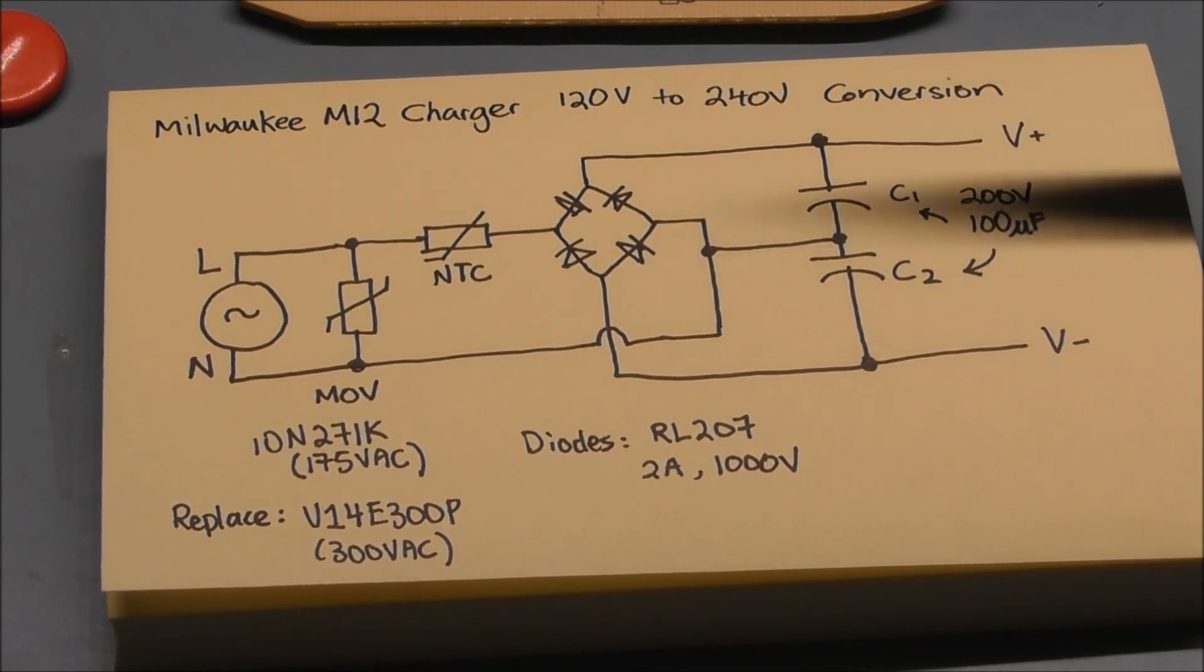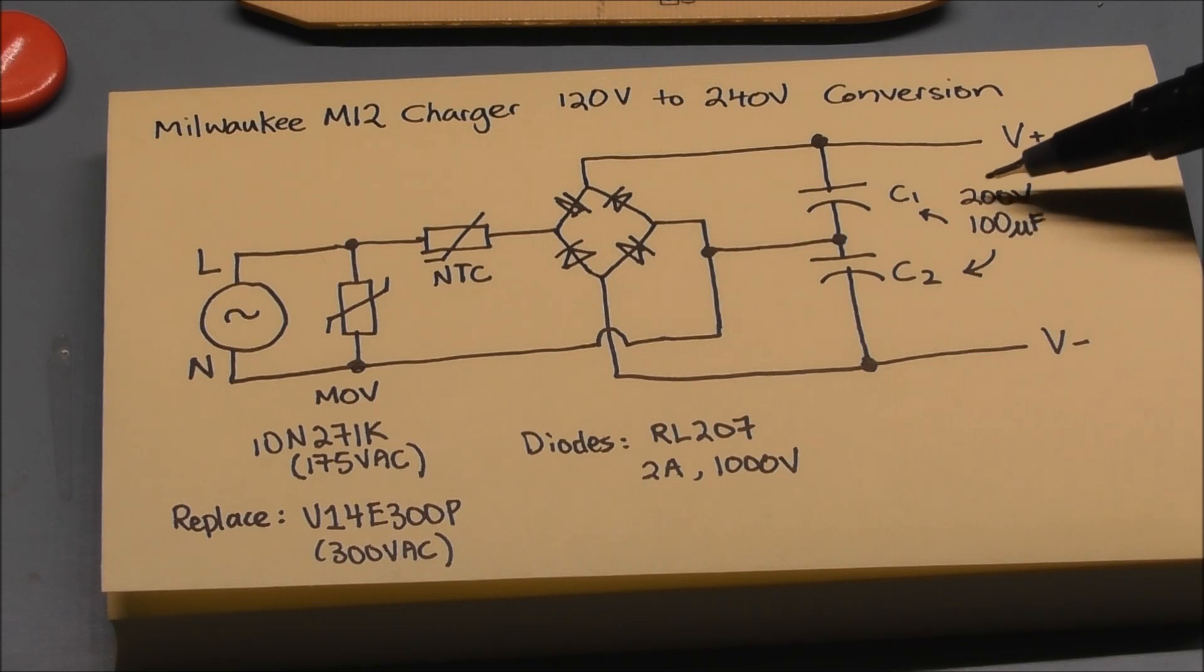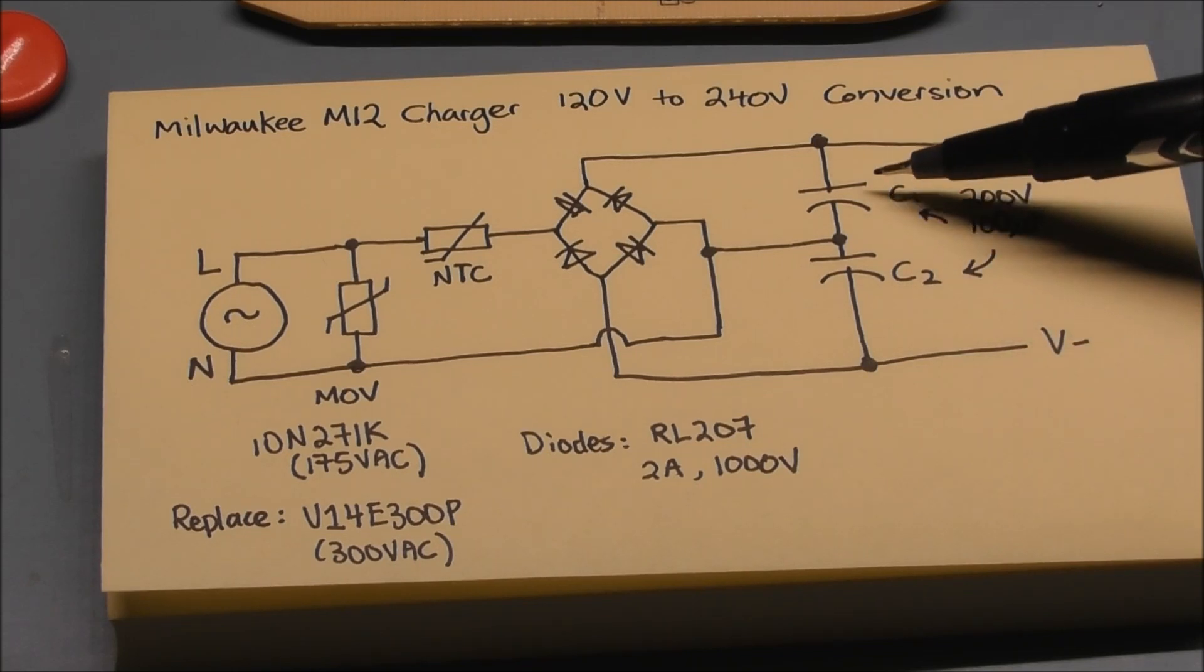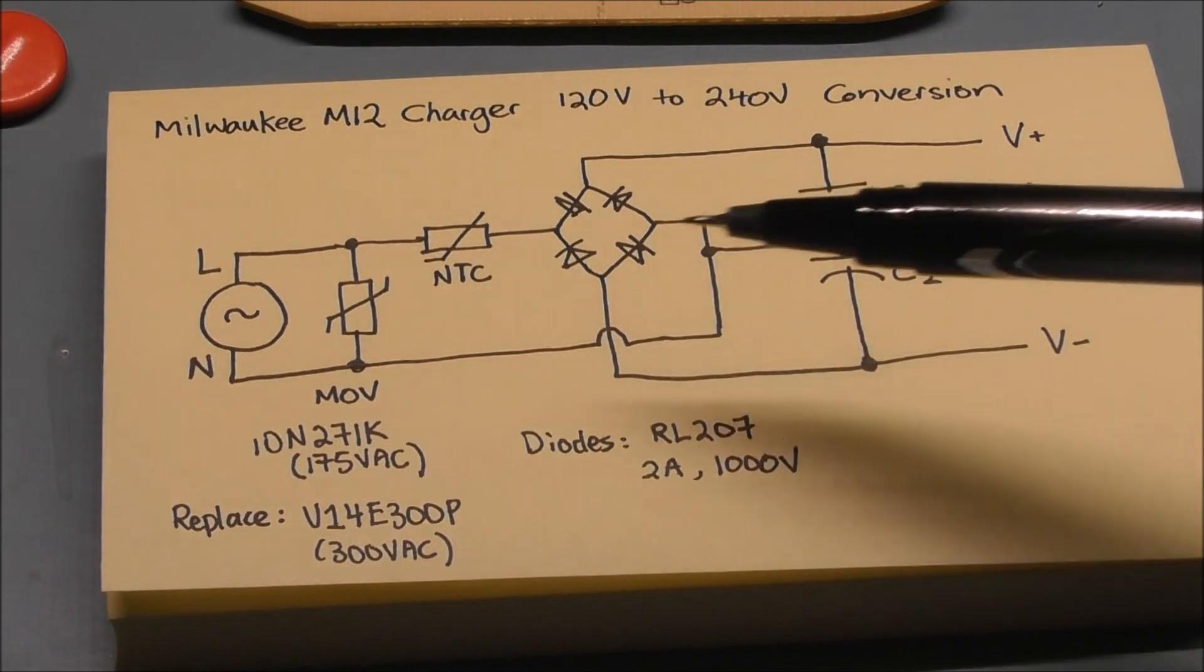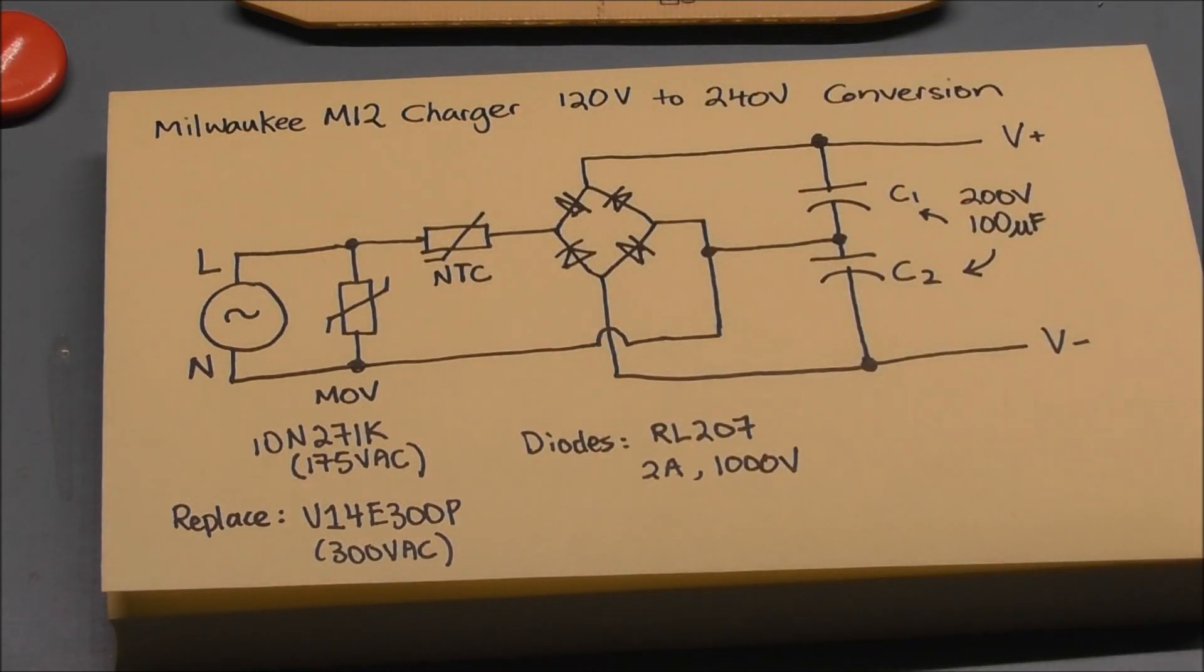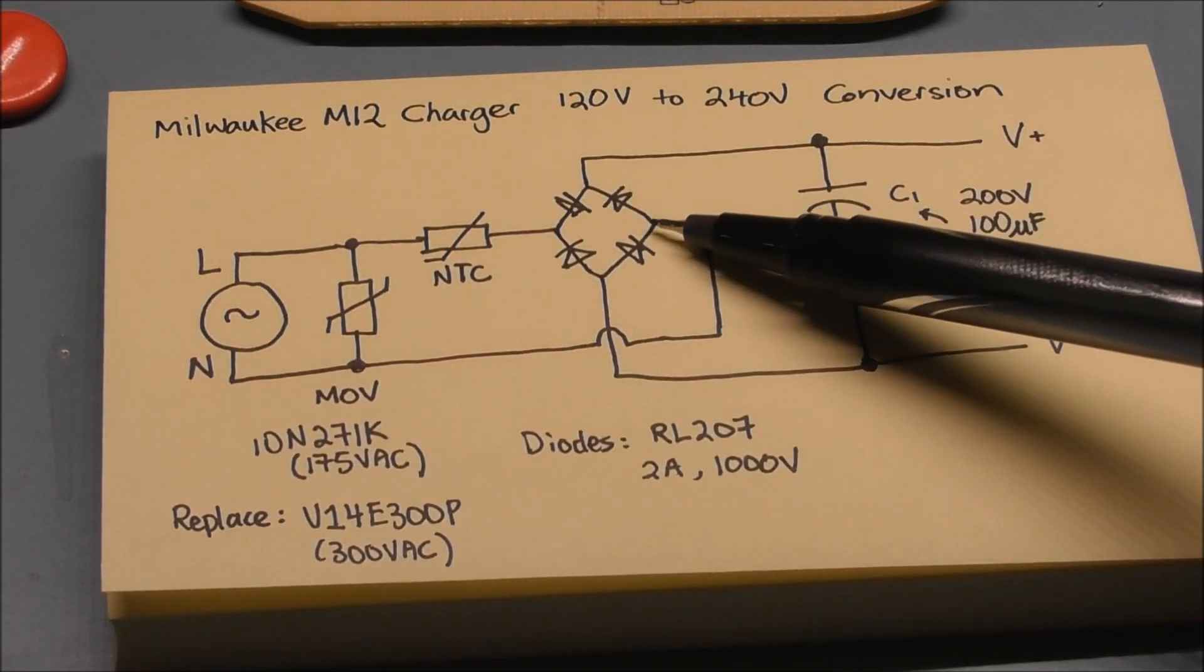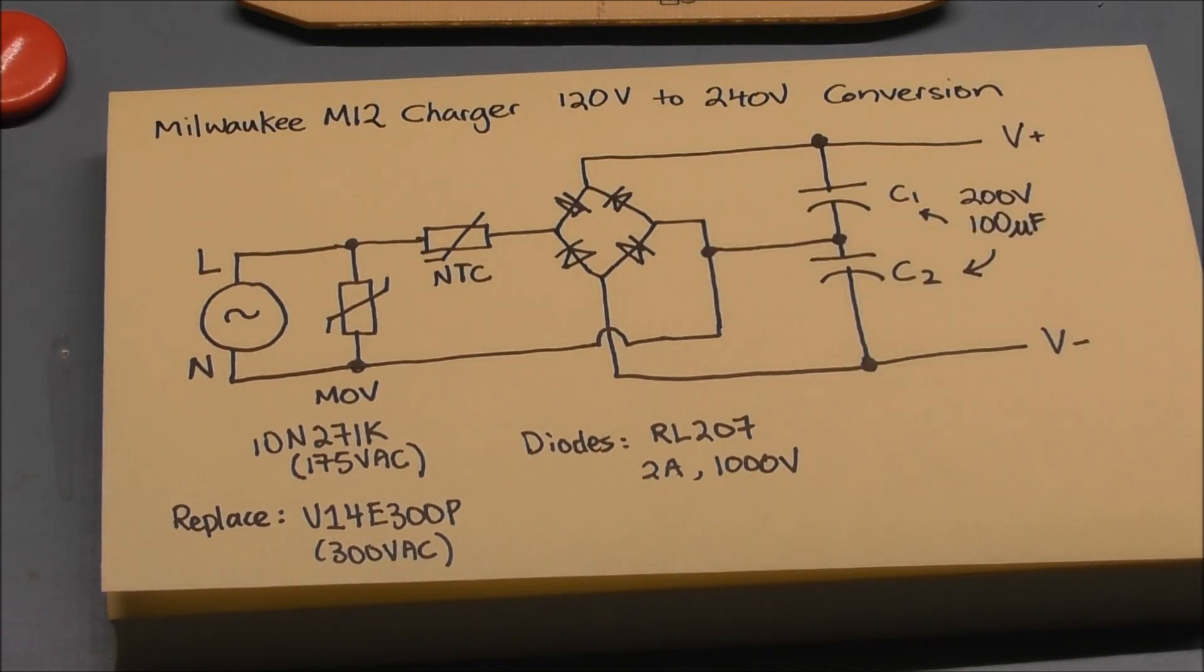And here comes the interesting part: we have two main filtering capacitors, each one's 200 volt and 100 microfarads—we'll call them C1 and C2—and they are in fact arranged in series. But the way that Milwaukee has designed this charger is to have them in almost like a voltage doubler circuit. So what we have is the neutral line that's tied to one end of the bridge rectifier, but it's also tied to the middle of these two capacitors.